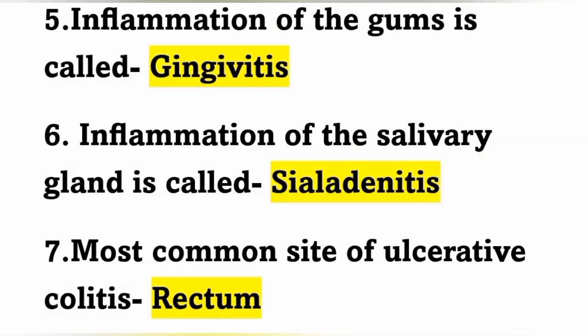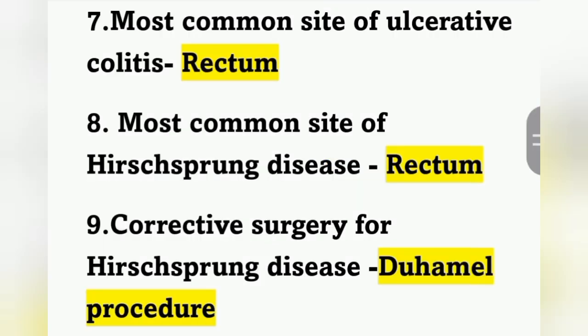The next question: inflammation of the salivary gland is called sialadenitis. Sialadenitis means inflammation of the salivary gland. Inflammation of the gum is called gingivitis. Next question: most common site of ulcerative colitis is the rectum.